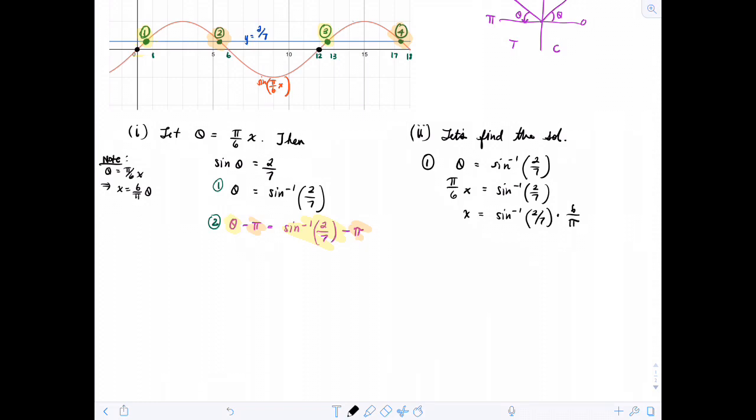for angle number two, theta is equal to inverse sine of 2 sevenths minus pi. So this means that x will be equal to inverse sine of 2 sevenths minus pi, all times 6 over pi. Great.